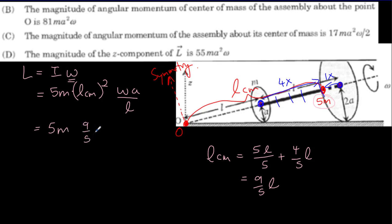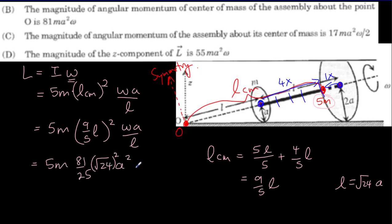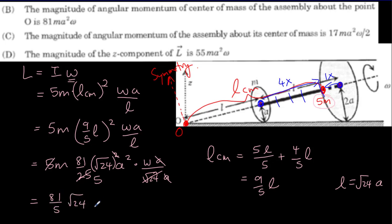Plugging in: 5m times (9l/5)² times omega·a over l. We need to get rid of all the l's, recalling that l equals √24 times a. Working this through, we get 81 over 5 times √24 times a² times omega times m. We can see this does not equal 81ma²omega because of this extra factor of √24 over 5, which is almost equal to 1 but not quite. So part B is incorrect.